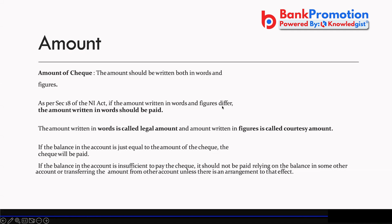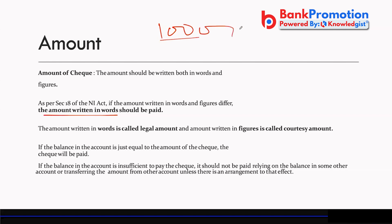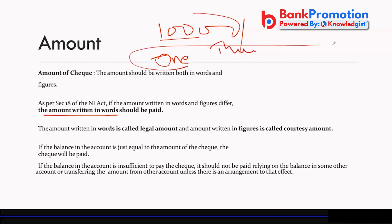The amount should be written both in words and in figures. If the amounts differ, the amount written in words prevails. This is because figures are more prone to alteration — e.g., adding a zero to change ₹1,000 to ₹10,000 — whereas a spelling mistake in words like writing 'one hundred' instead of 'one thousand' is less likely.